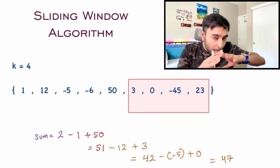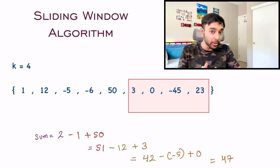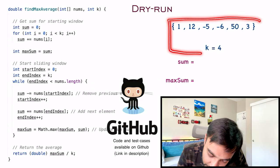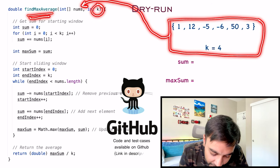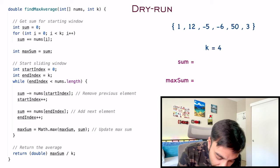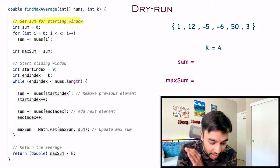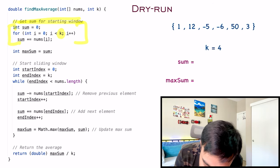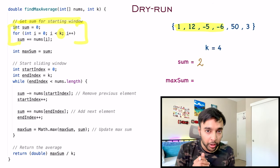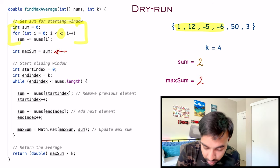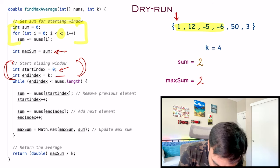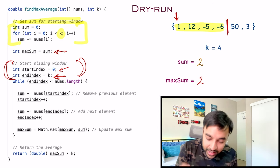Let's do a dry run of the code. On the left side of the screen is the actual code implementing this solution. On the right is a sample array passed as input to the function findMaxAverage along with the value k that determines the window size. First, we define a sum for the starting window by running a for loop with k elements to add up the first four elements. The current sum is 2. We store this as the initial max sum.